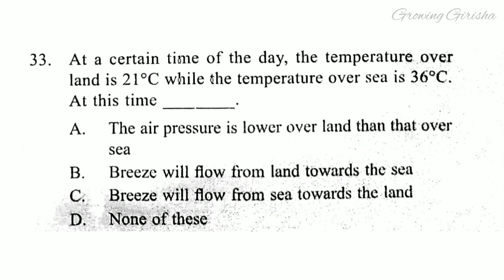Question 33. At a certain time of the day, the temperature over land is 21 degrees Celsius, while the temperature over sea is 36 degrees Celsius. Answer is option B: Breeze will flow from land towards sea.